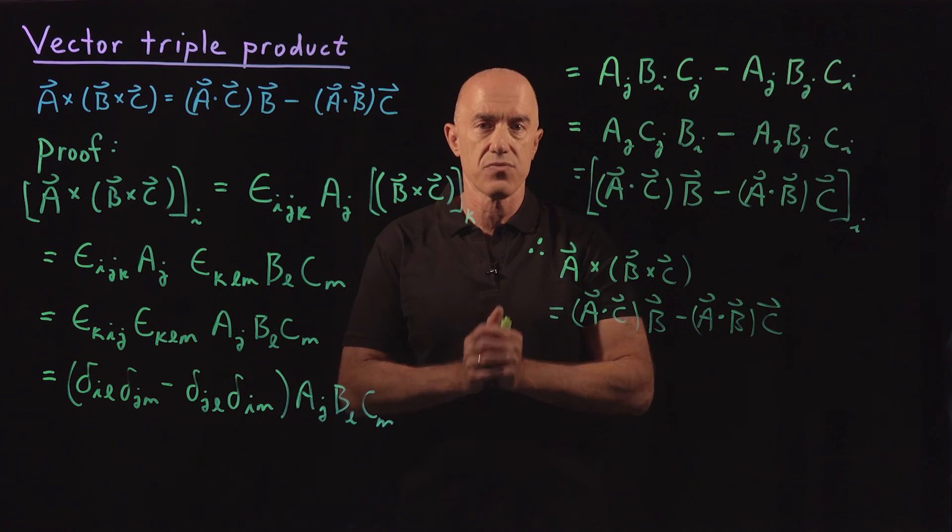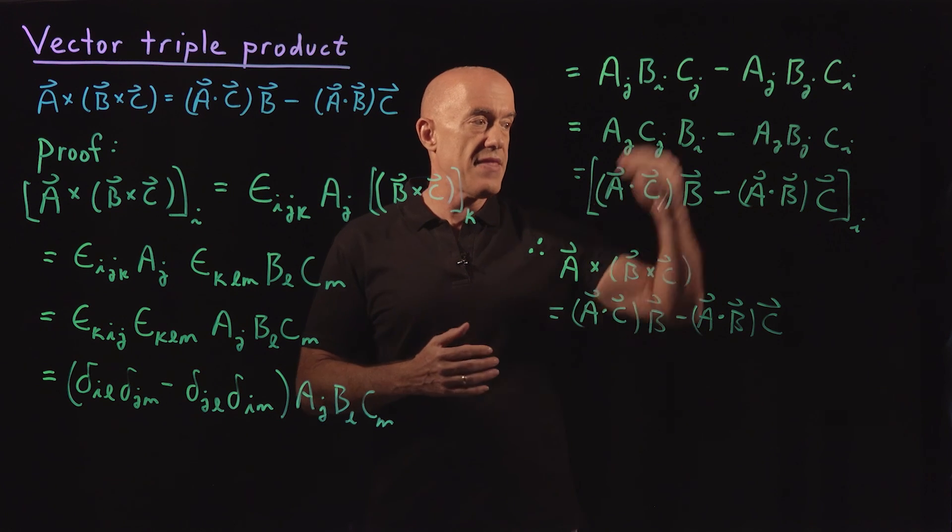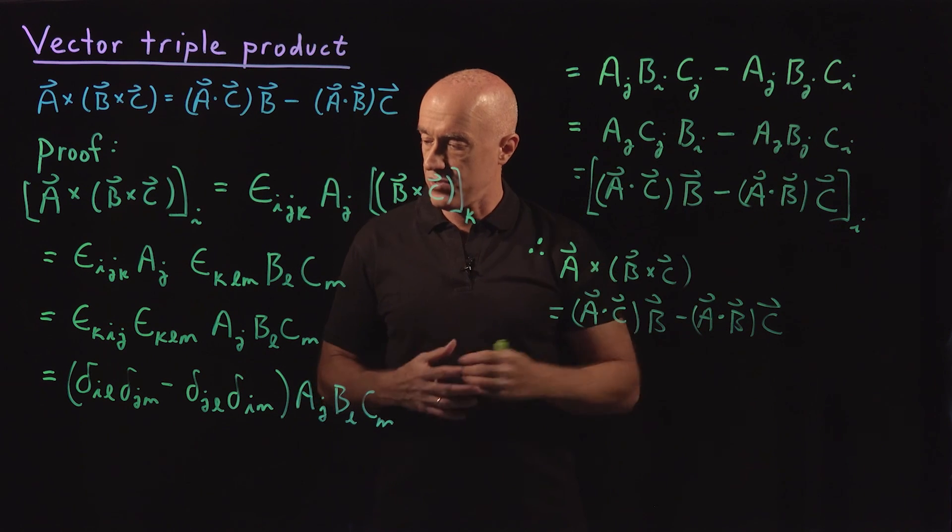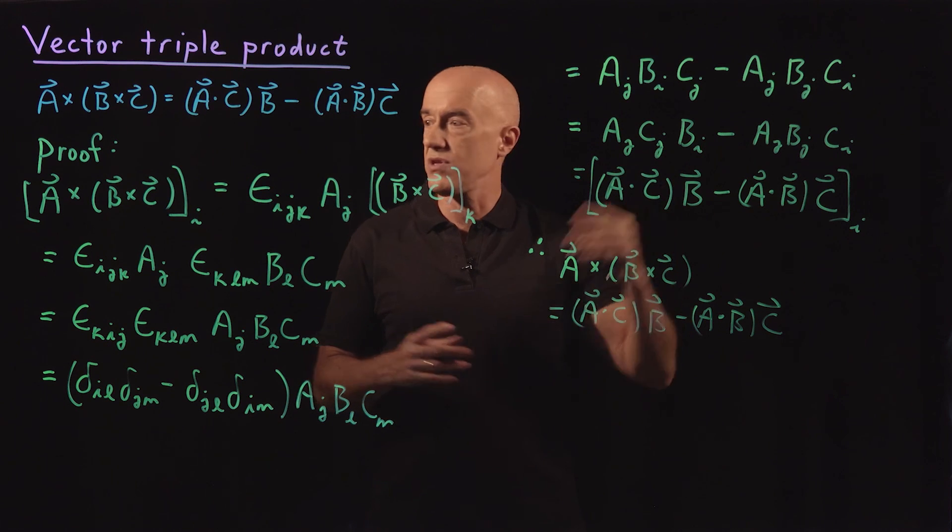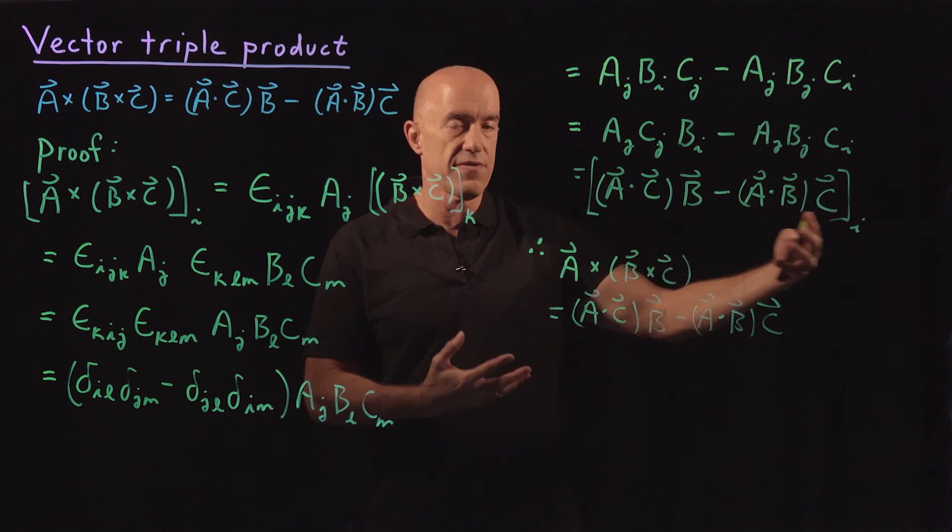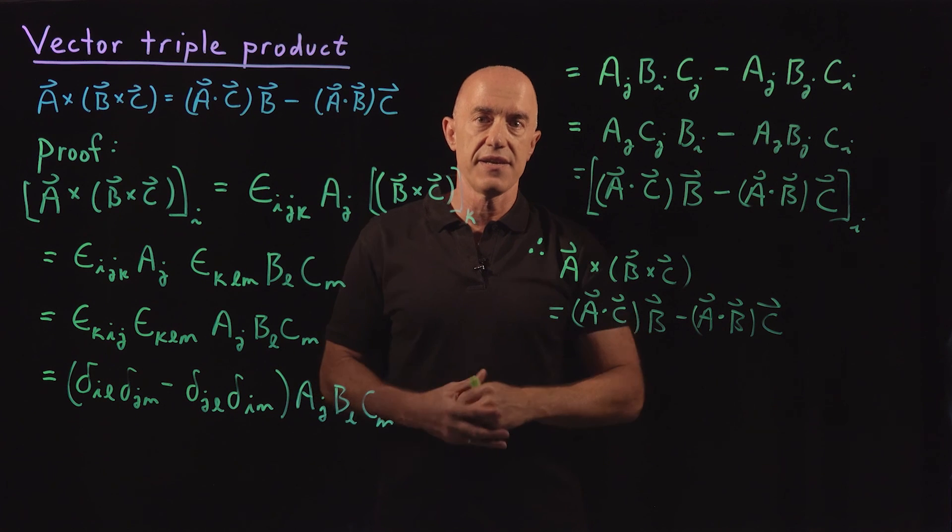So I choose to keep i and j and replace l and m. You don't have to do that, but that's what I chose to do. And then the end result is j is then summed over, but i will never be summed over because we're looking at the i-th component and then rewrite it in terms of vectors and the identity falls out.